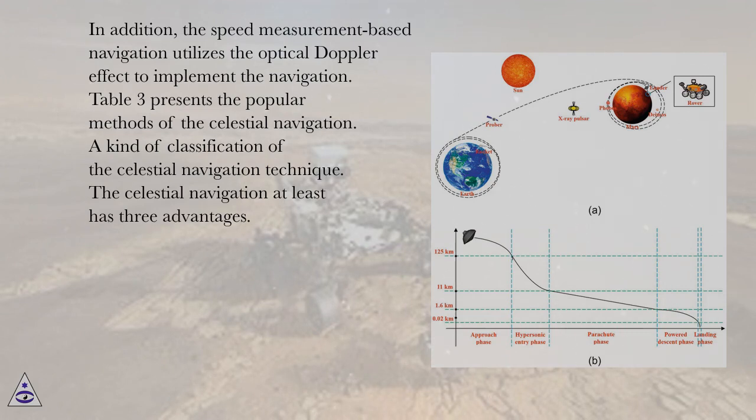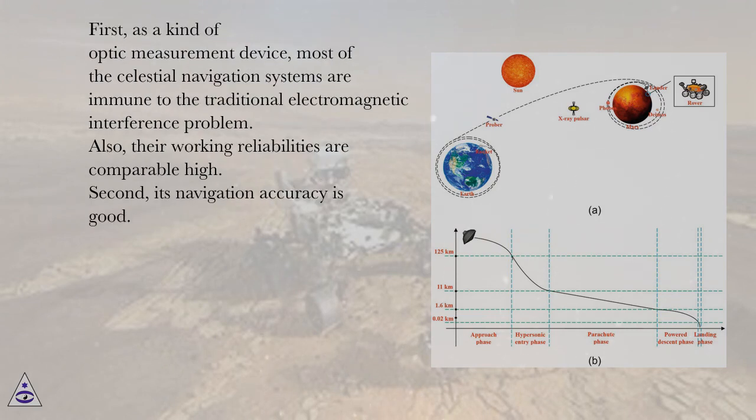The celestial navigation at least has three advantages. First, as a kind of optic measurement device, most of the celestial navigation systems are immune to the traditional electromagnetic interference problem. Also, their working reliabilities are comparably high.